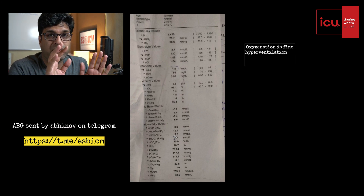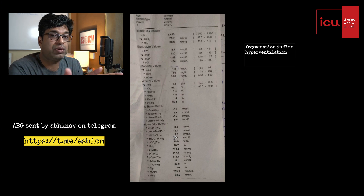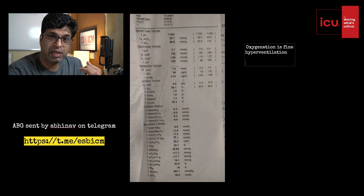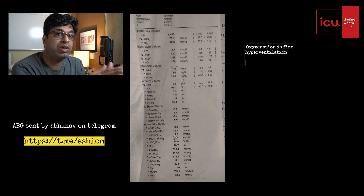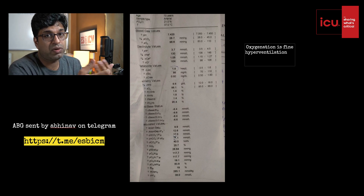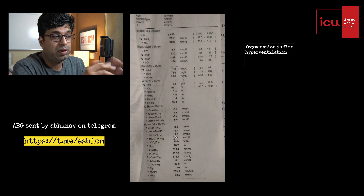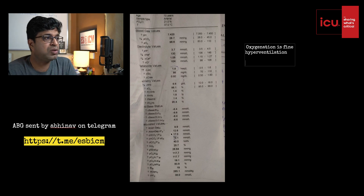Today I want to emphasize that compensation never overshoots the primary disorder. For example, if there is a primary metabolic acidosis, respiratory alkalosis will not overshoot to make the pH alkalotic. Similarly, if a patient has respiratory alkalosis and is hyperventilating, the compensatory metabolic acidosis will not overshoot. Likewise, in metabolic alkalosis, rising bicarbonate is compensated by rising PCO2, but PCO2 will not rise enough to make the pH acidotic.